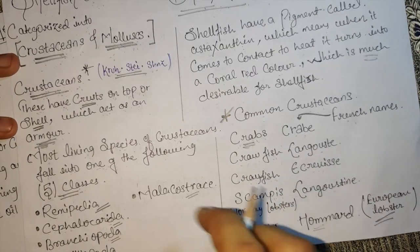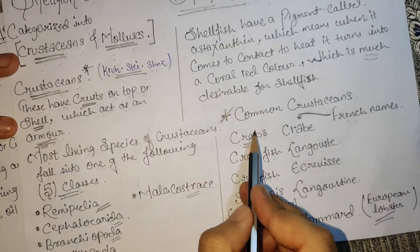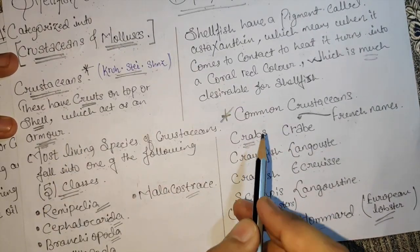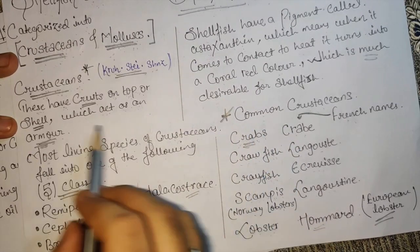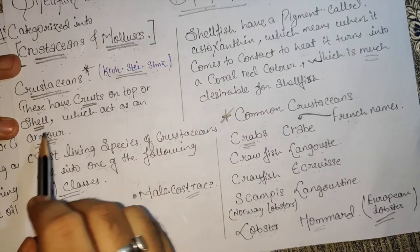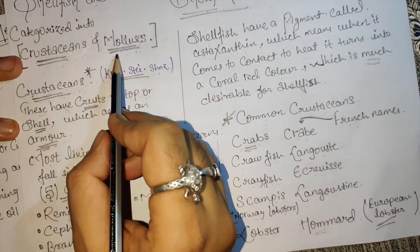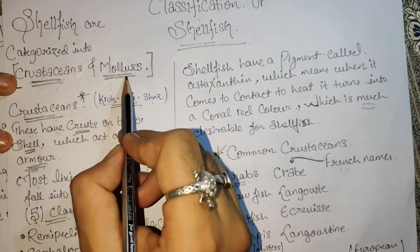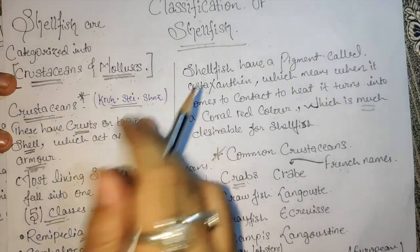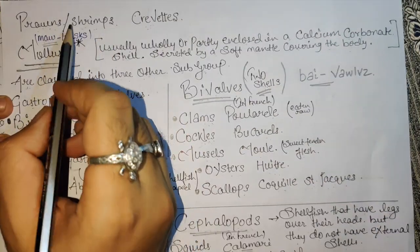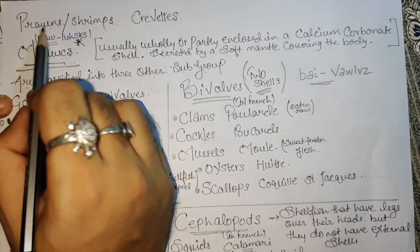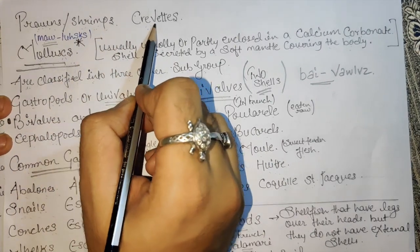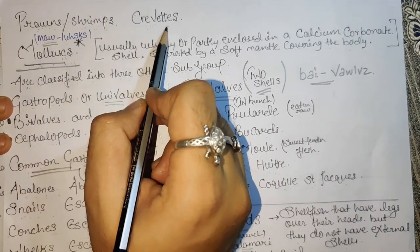It will be clear to you that these crustaceans all have more shells. For example, the crab — 'crabe' — has a shell on its body that works as armor. Also included in crustaceans are prawns and shrimps, which we call 'crevettes.'